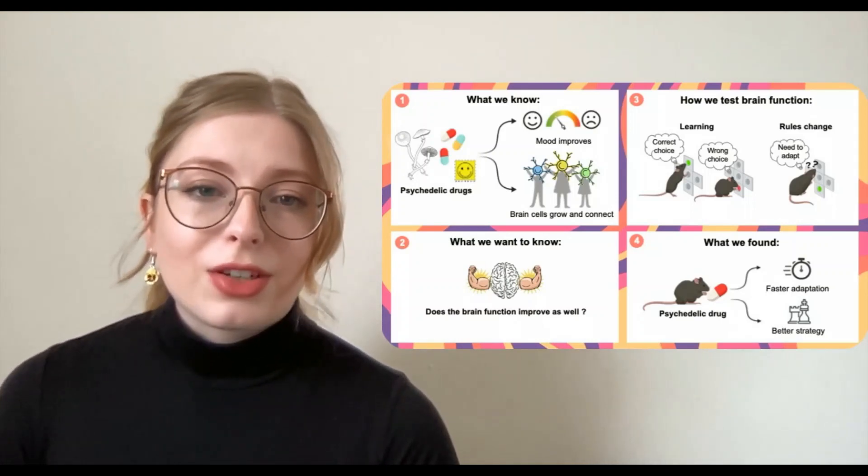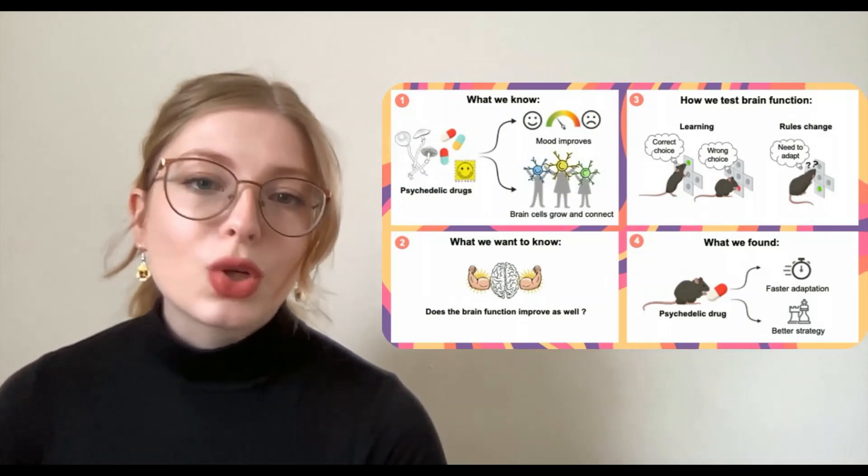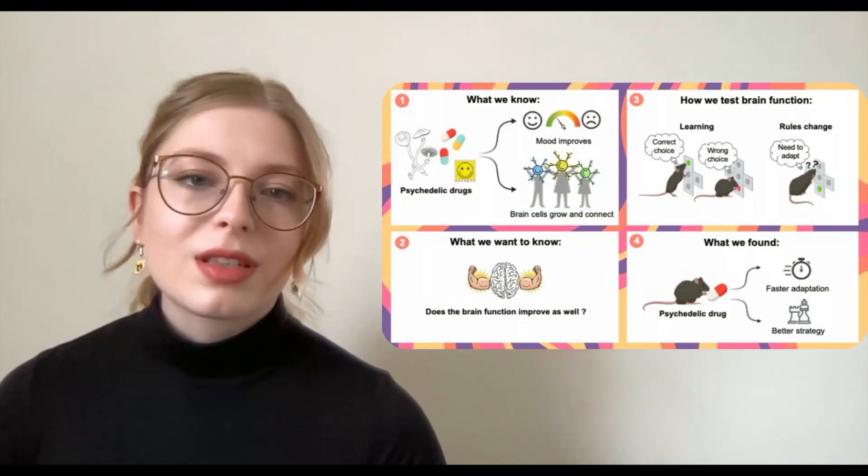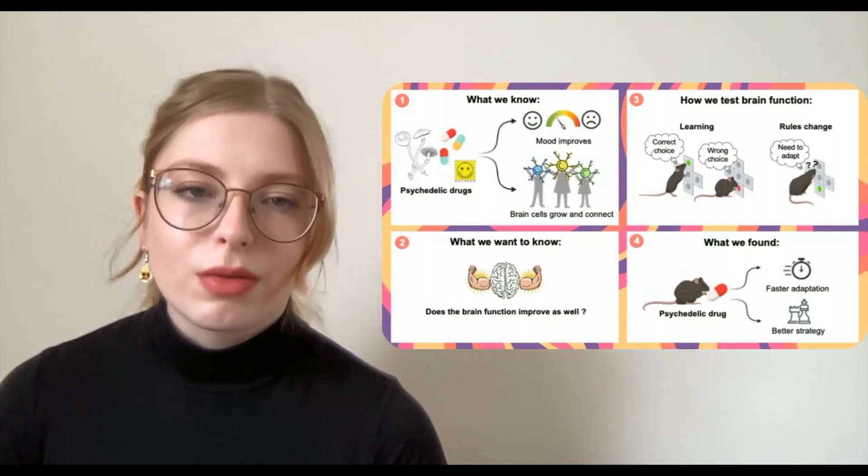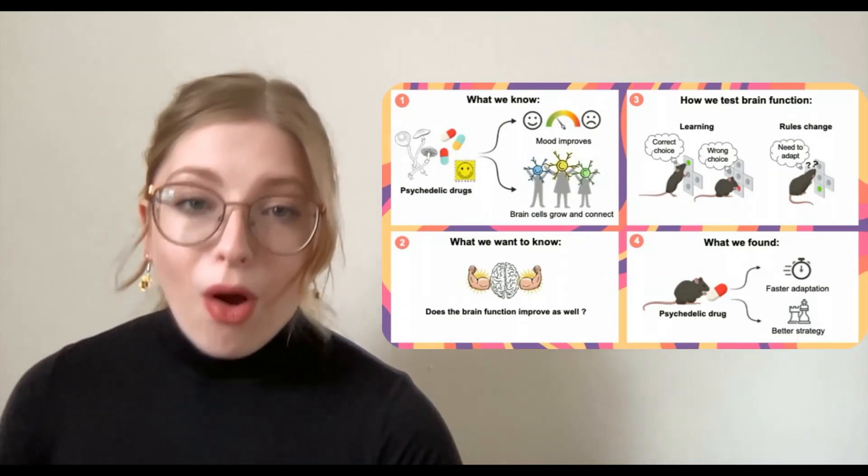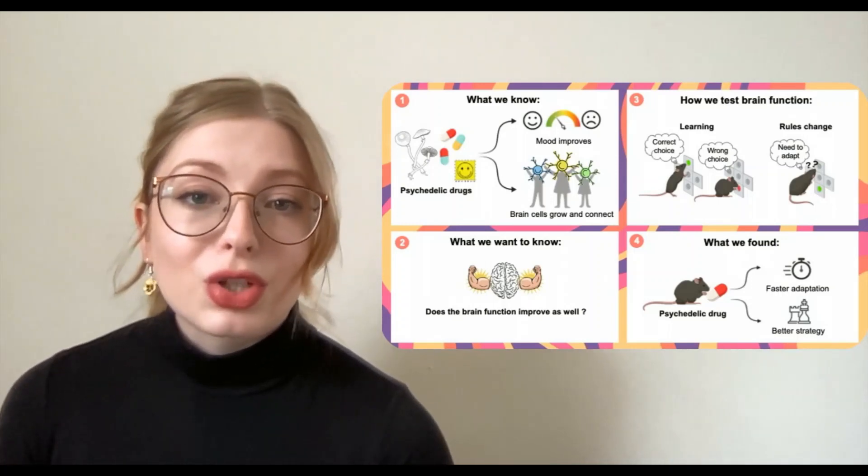I used statistical models to figure out how animals learn what choices to make, and found that mice normally only learn from the rewards they get, but they don't really pay attention when they miss out on a reward. But with a psychedelic, mice started learning from all those times when they didn't get a reward too.